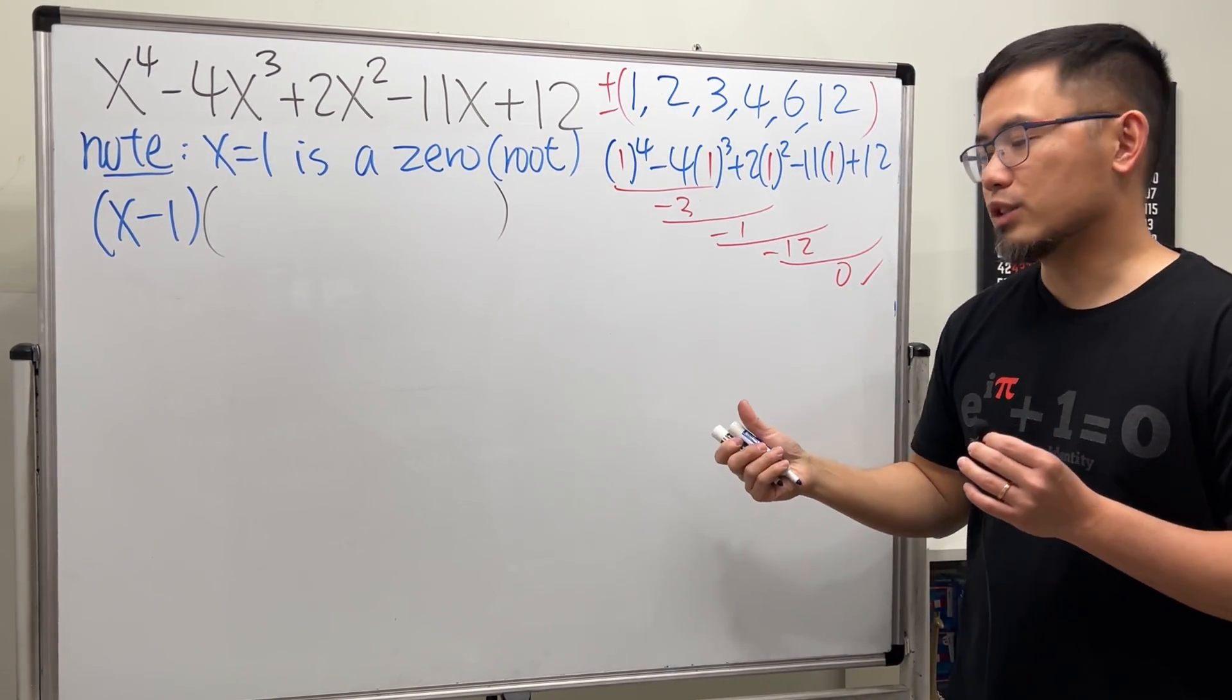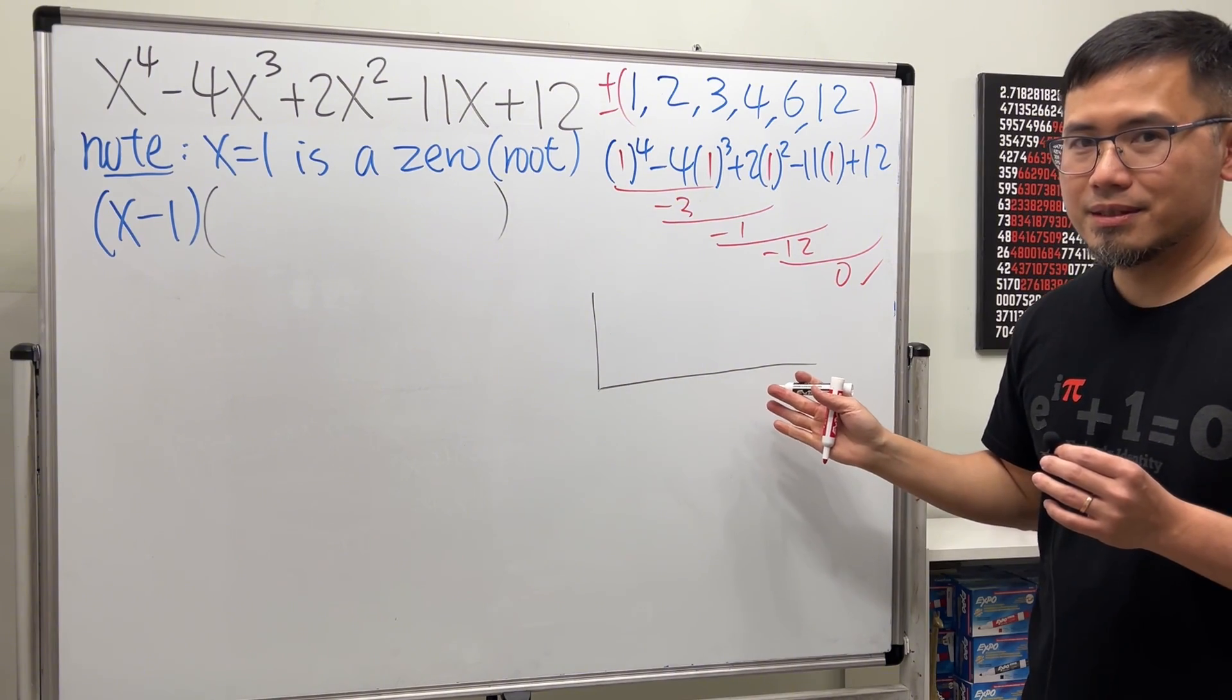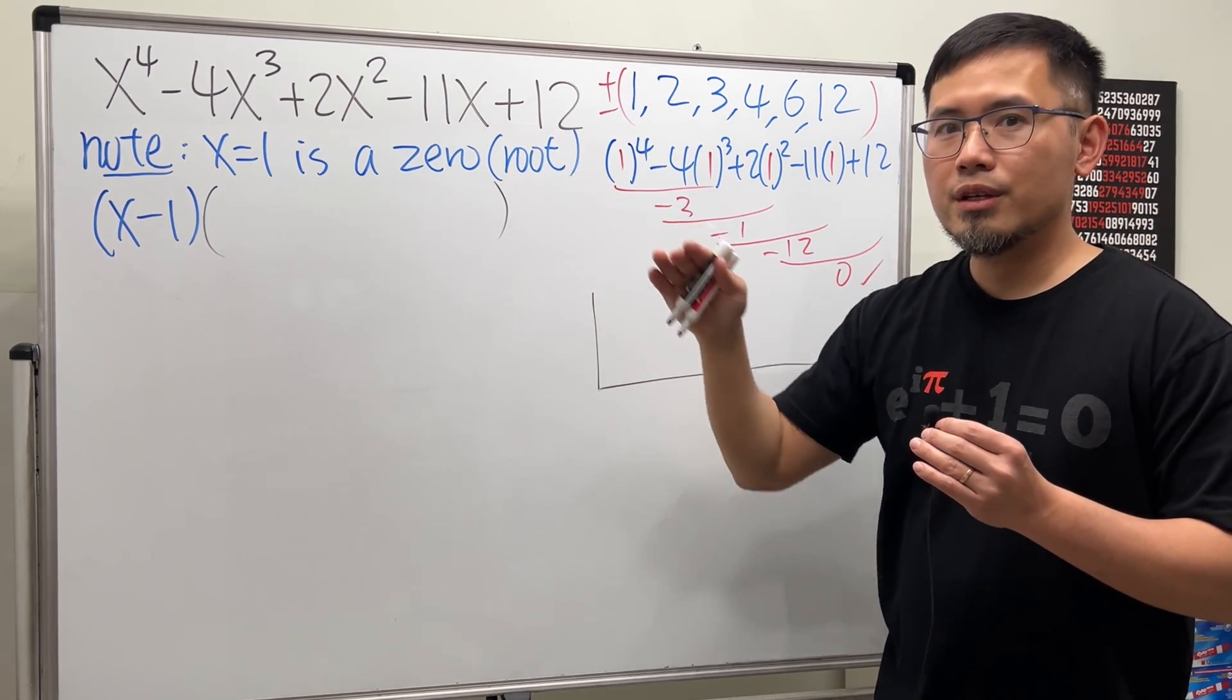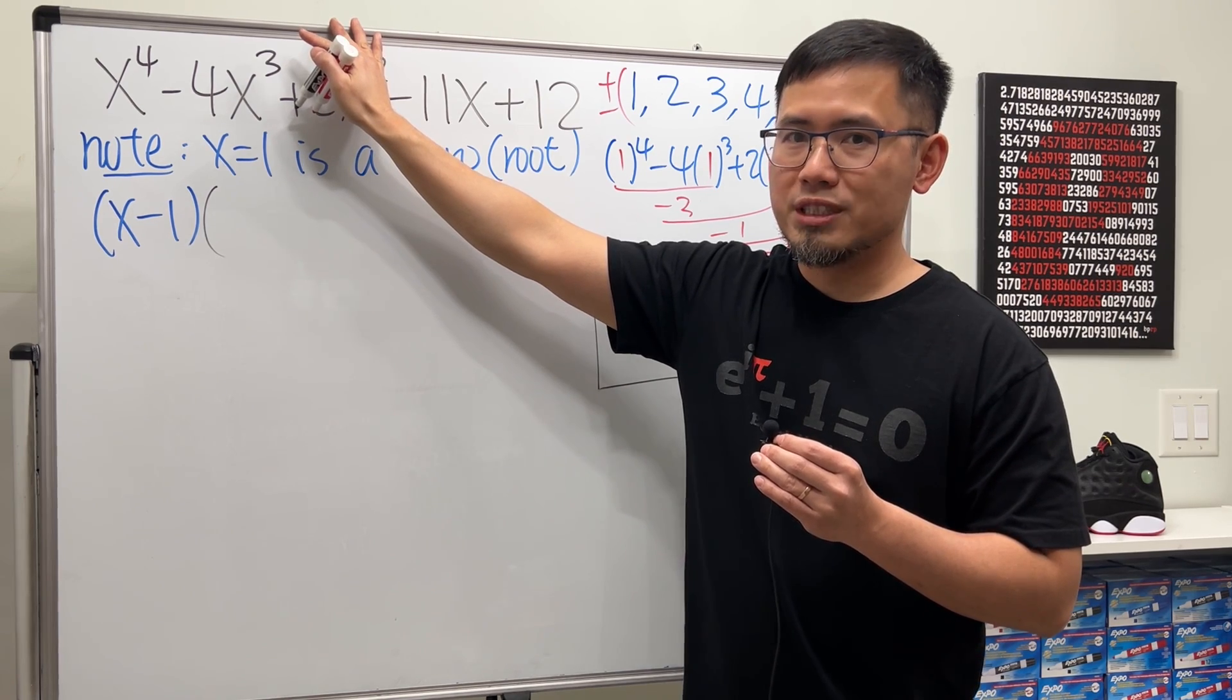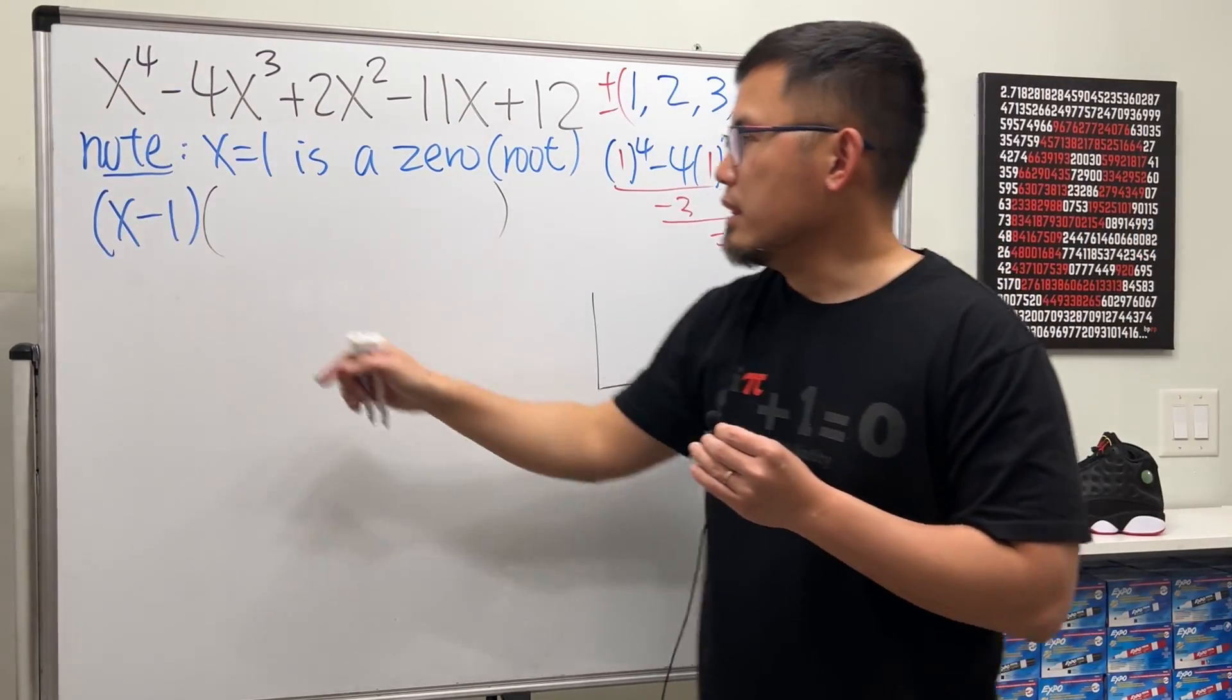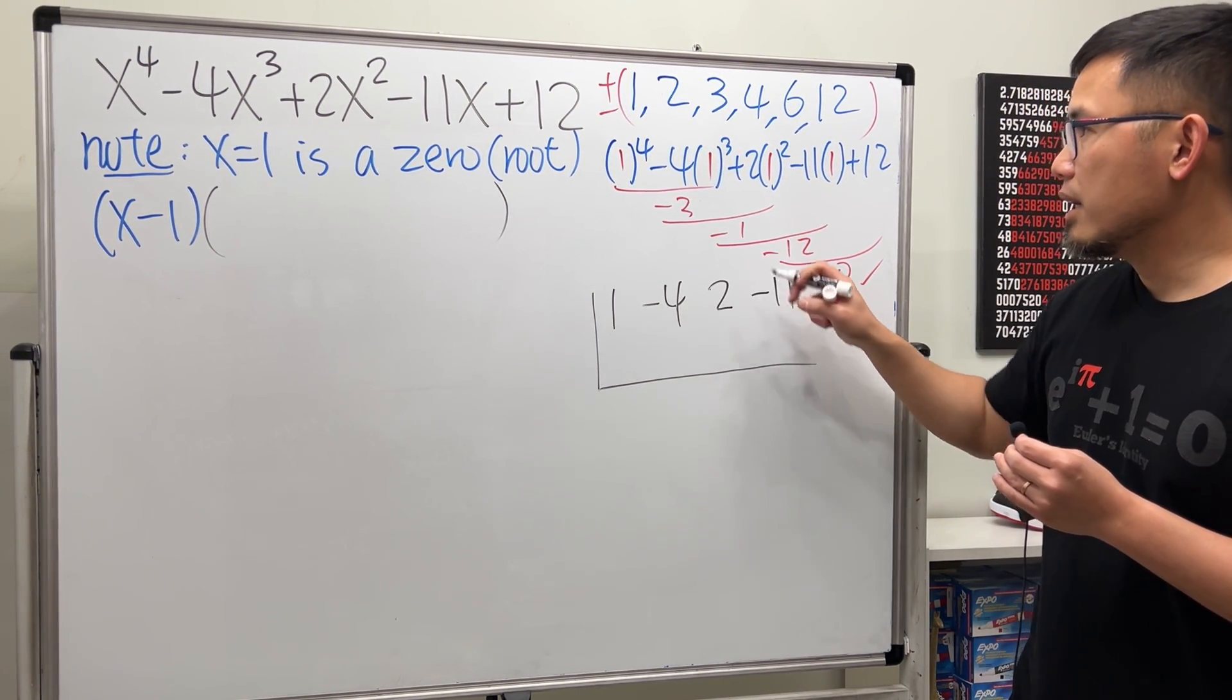And to do so, this is where we have to use synthetic division. To do so, I'm just going to draw like a half box like this. First notice all the powers are present: four, three, two, one, and then no x. Sometimes you may be missing an x squared term, in that case you have to use zero x squared, but we don't have to worry about that. Let's just go ahead and write down the coefficients right here.